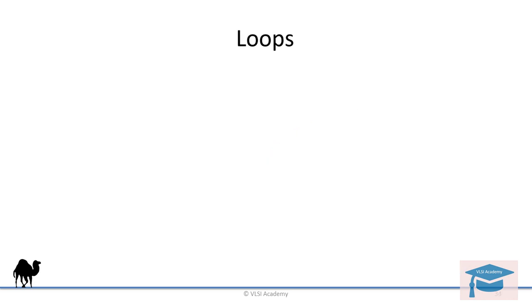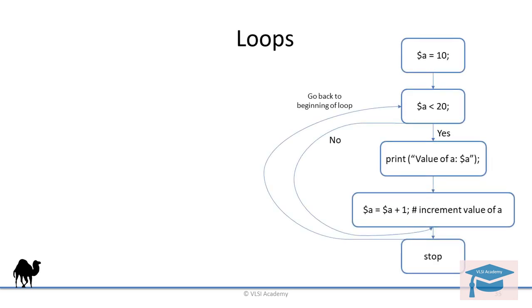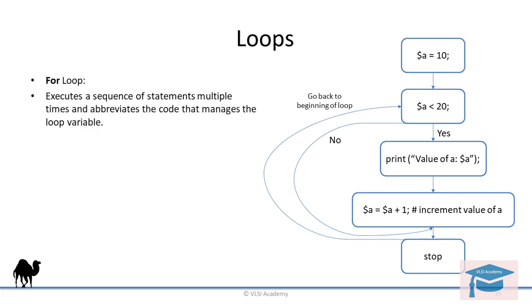Let us move on to the for loop. The flowchart of the for loop and while loop is exactly the same. The only difference is in the way you write the for loop. So it executes a sequence of statements multiple times and abbreviates the code that manages the loop variable.